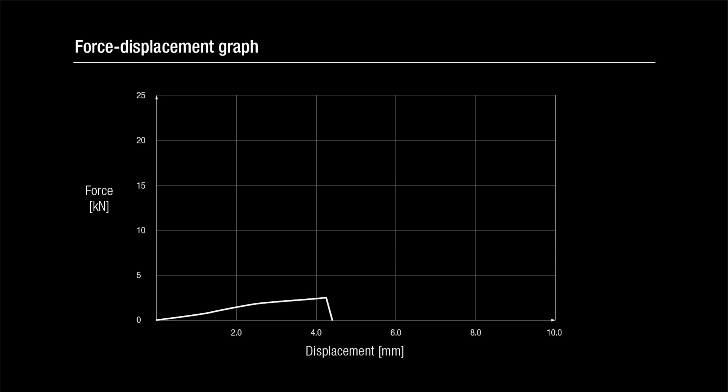This failure load is a tiny fraction of the load that we would see for a beam in which the grain runs parallel to the beam axis.